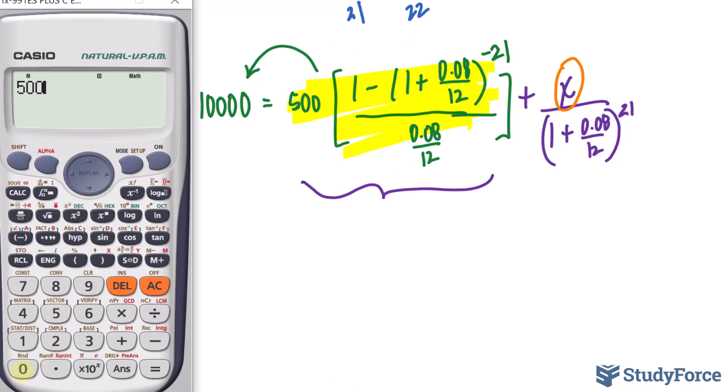We'll take 500, open up parenthesis, open up a fraction, then put in your numerator: 1 take away 1 plus 0.08 divided by 12 raised to the power of negative 21. At the bottom, we put in 0.08 divided by 12. As I said before, this should output something slightly smaller than 10,000, and you see it now on your screen. So we'll take that value and transfer it over.